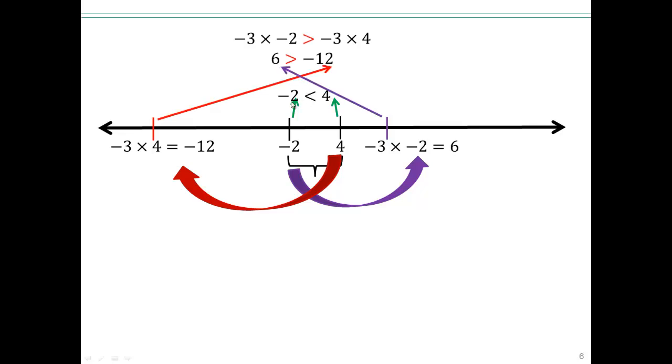So do you think this is preserved or not? Well, no, because negative 12 is here and 6 is here. So 6 is bigger than negative 12. So negative 2 times negative 3 is 6. But 4 times negative 3 is negative 12. So this less than symbol does not work. You have to flip it. So multiplying by a negative number on both sides changes the inequality. It does not preserve it anymore.